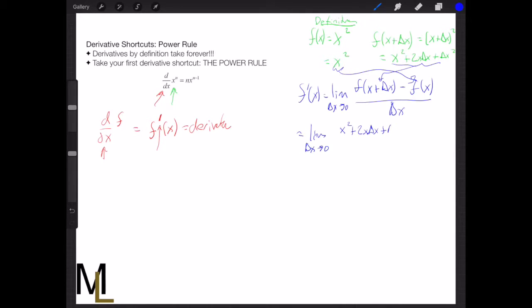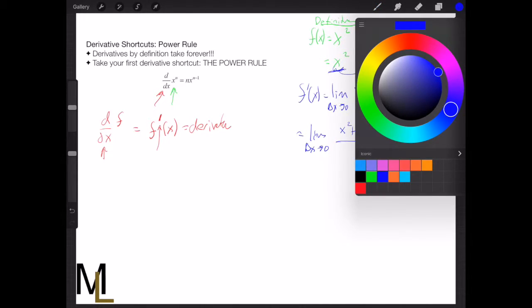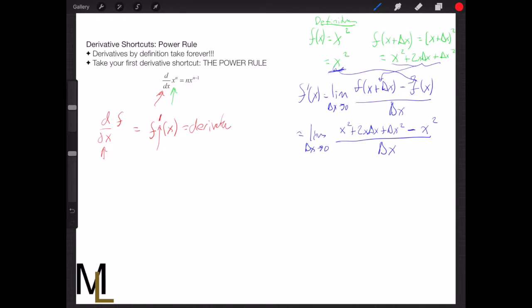So we get this, and then we minus the f of x term over here, so that's x squared, and we divide by delta x. And like we've seen before, when you're doing it right, things cancel. So here we get an x squared, and we minus x squared. So that's good.